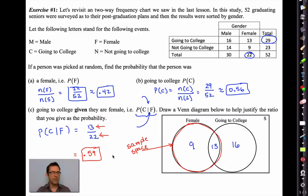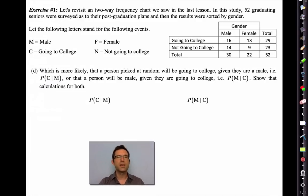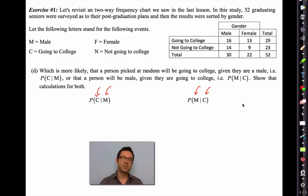Letter D says: which is more likely — that a person picked at random will be going to college given that they're male, or that the person will be male given that they're going to college? It may seem at the outset that these should be the same thing, but they're not.